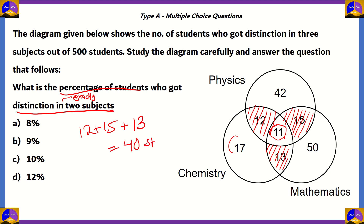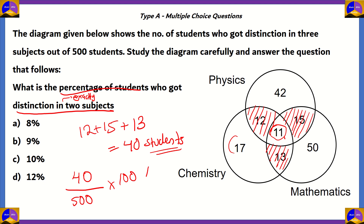That gives 40 students. Since they are asking for the percentage, we take the number of students divided by the total number of students, multiplied by 100%. So, 40 divided by 500, multiplied by 100, gives us 8%. Option A, 8%, is the correct answer.